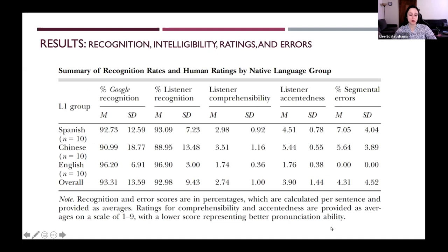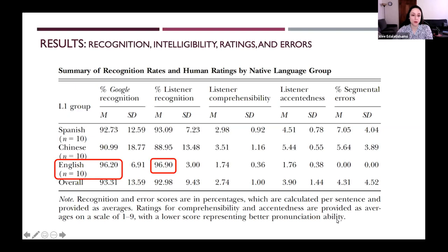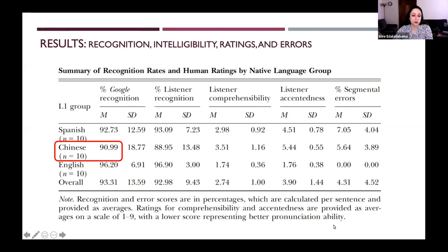This table shows results in percentages for Google Voice Typing recognition and listener recognition, comprehensibility ratings and accentedness ratings out of nine, and segmental errors. Recognition was highest for native speech — 96.2% by Google and 96.9% by human listeners. Overall Google Voice Typing recognition was above 90% for all groups, which is really good compared to previous studies. The lowest recognition score was for the Chinese group, both by Google at 90% and by human listeners at 89%.